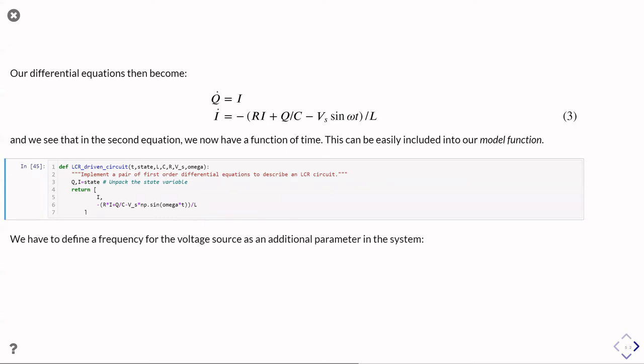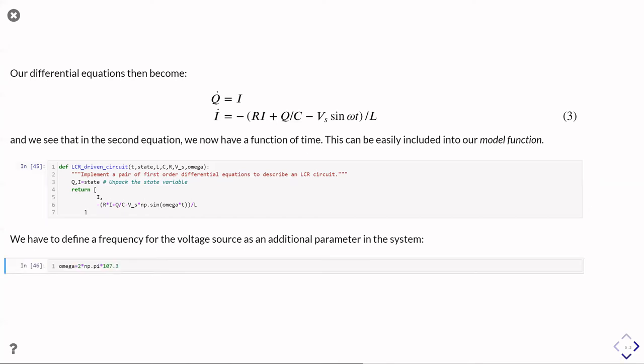That's the thing that we then have to pass in to our model function. If we go and set it up with a value, and I'm actually going to pick here a value I know to be at the resonant frequency of this circuit, we can go and see what happens.